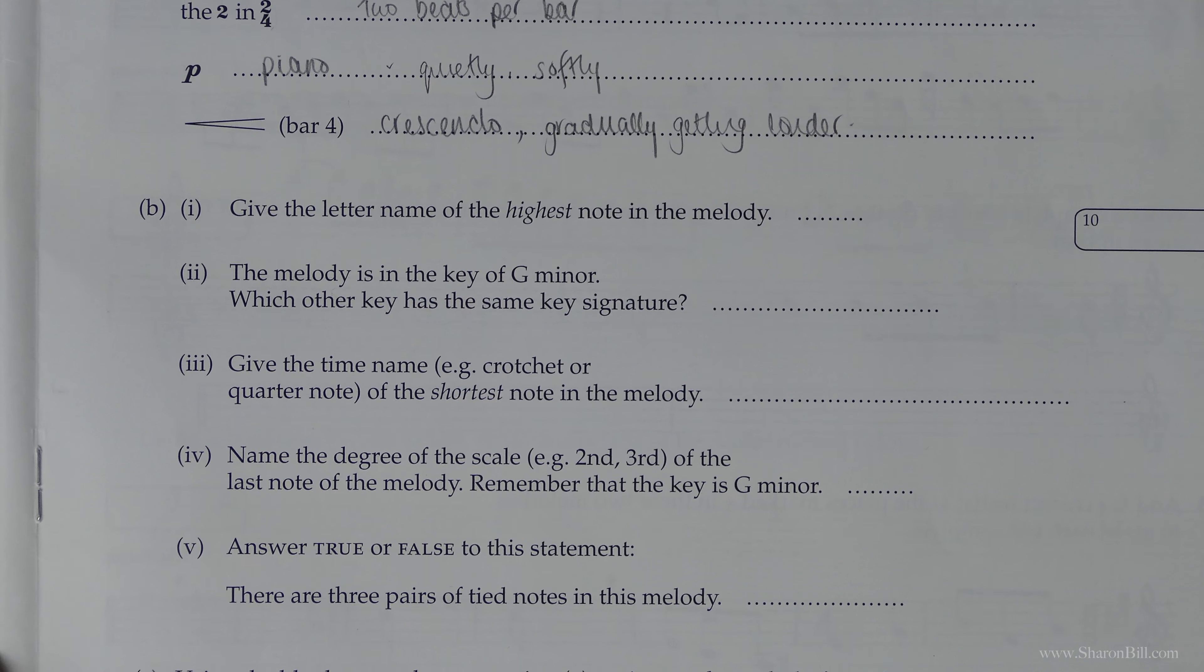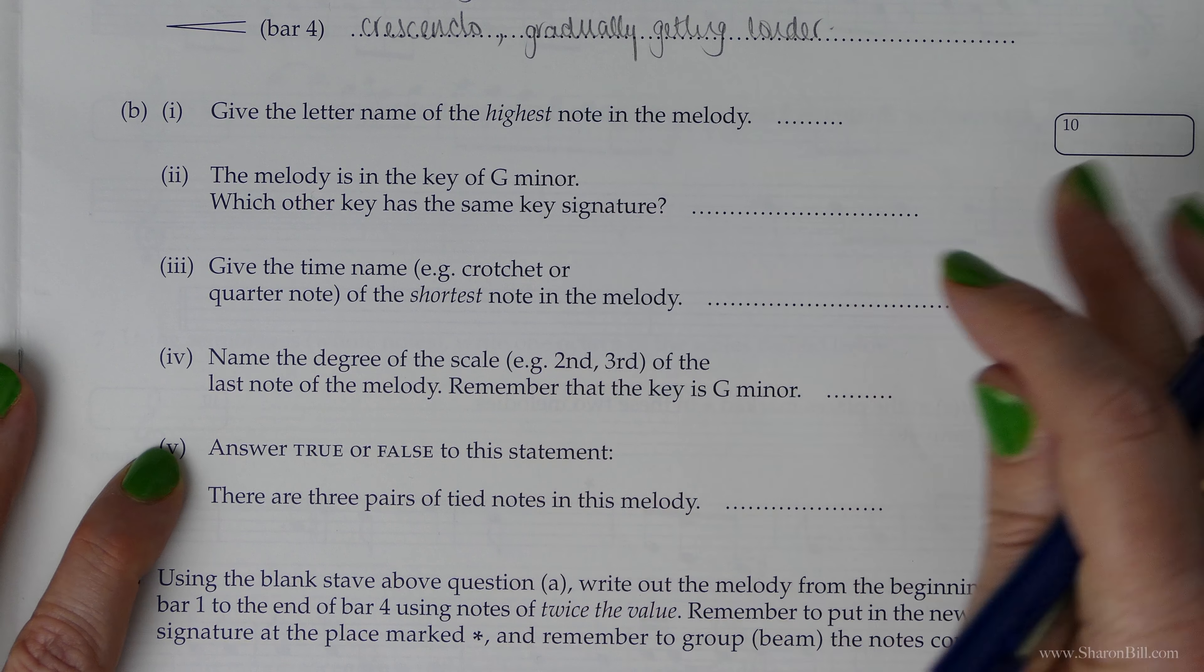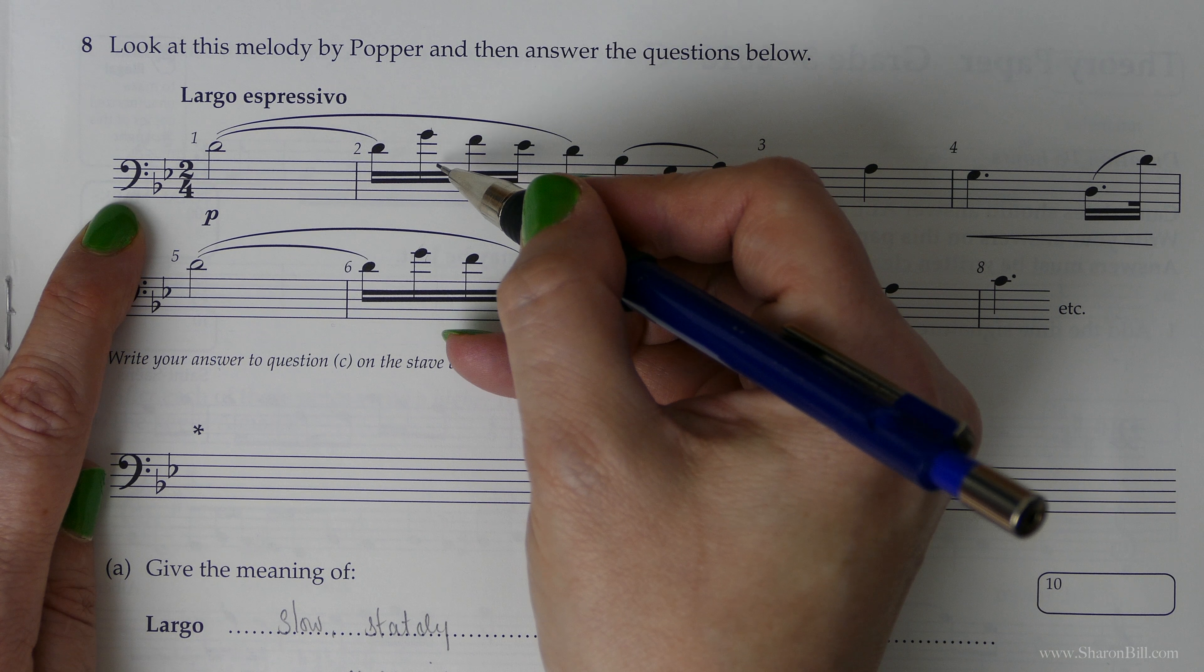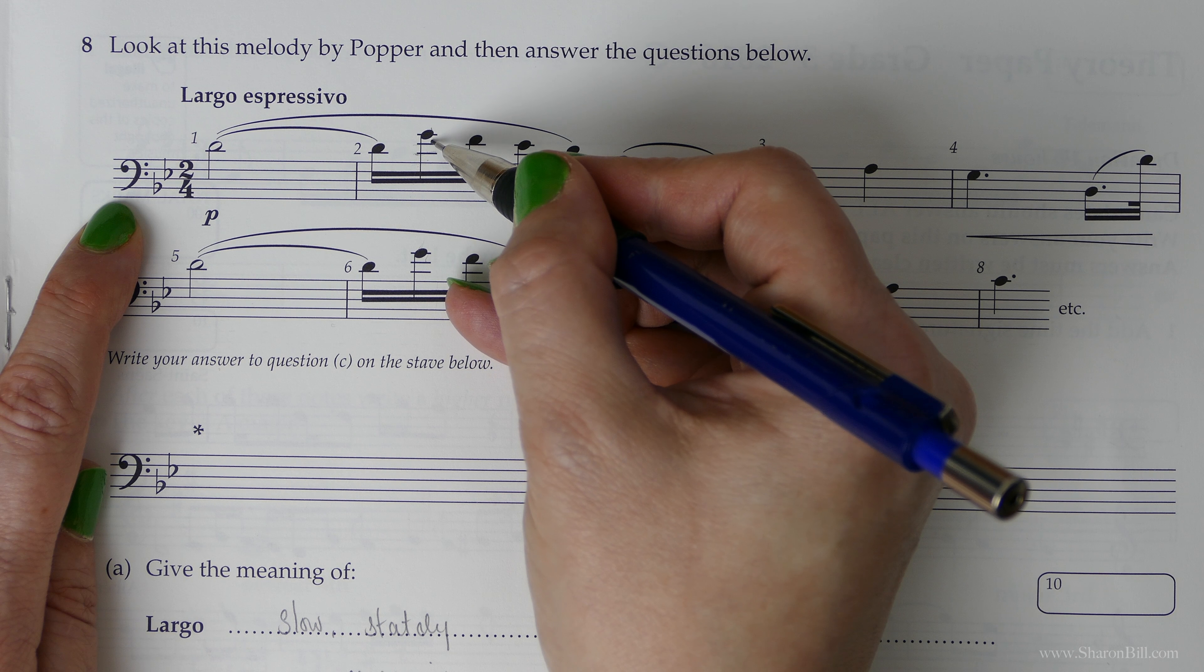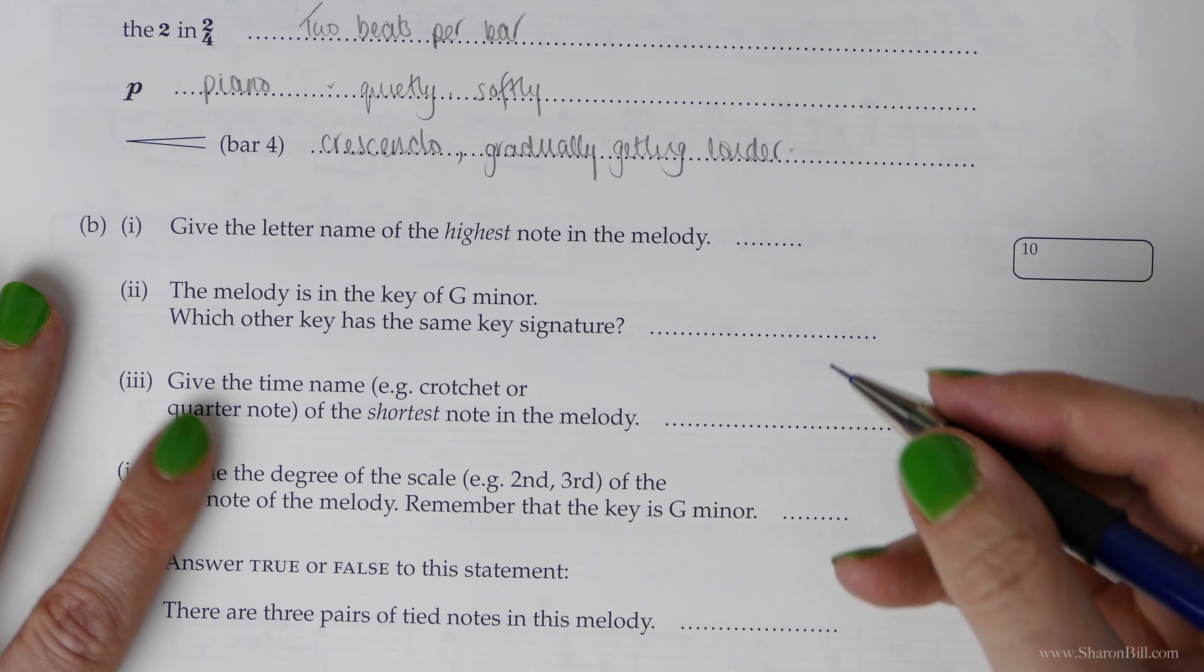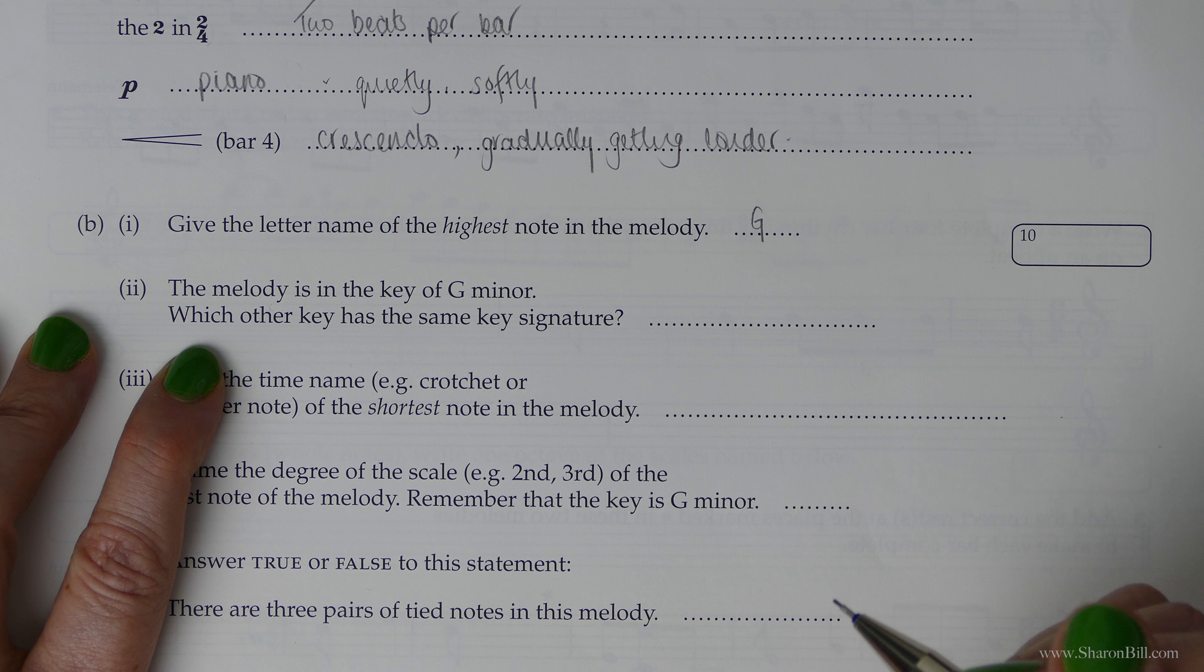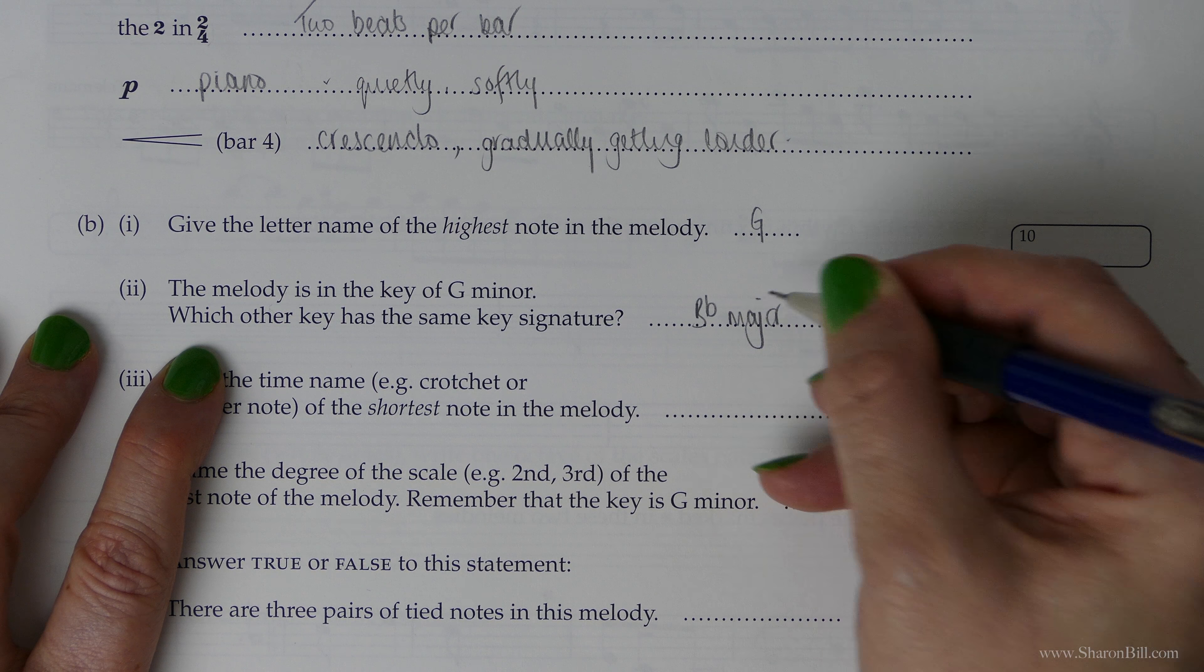Let's move on to section B. Again we're referring to the top extract of music. It says give the letter name of the highest note in the melody. We're in the bass clef and we need to look. There's lots of ledger lines here and here, and this one in both cases is the highest. We know it's good boys deserve football always: A, B, C, there's our middle C, C, D, E, F, G. So that's note G. We've got a key signature of B flats and E flats—that doesn't affect this so we can just write note G. The melody is in the key of G minor. Which other key has the same key signature? G minor is related to the key of B flat major which also has two flats, B flats and E flats.